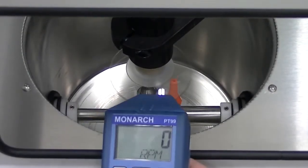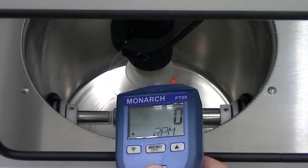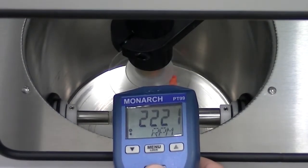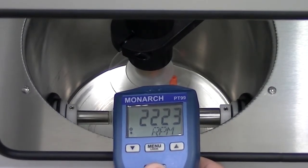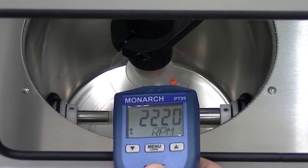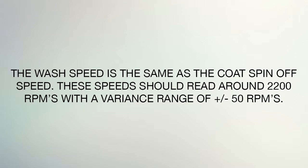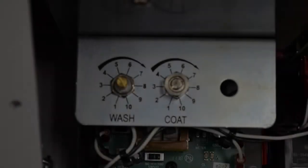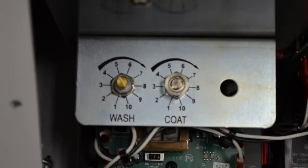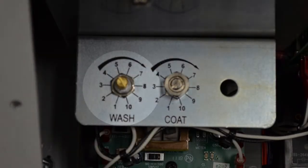Point the tachometer at reflective tape, then press and hold in top button. If this needs to be adjusted, use the speed pot labeled wash.